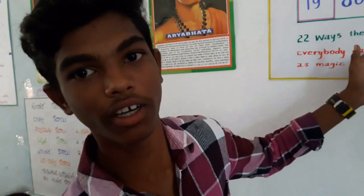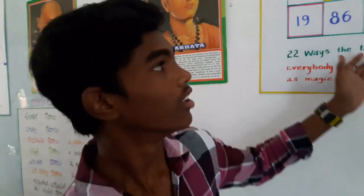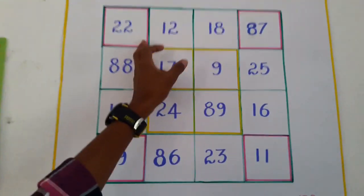This is the magic square, invented by Srinivasa Ramanujan. This is the date of birth of Ramanujan.